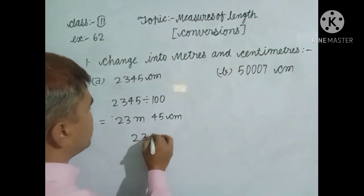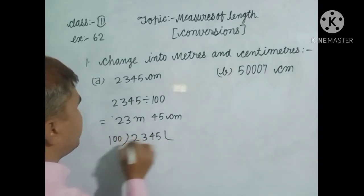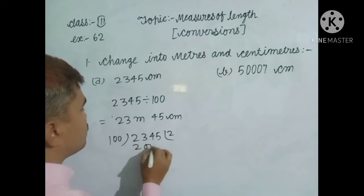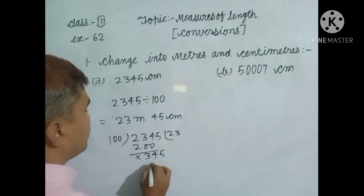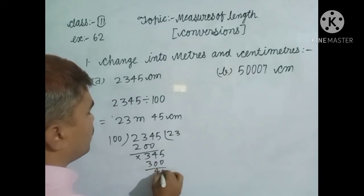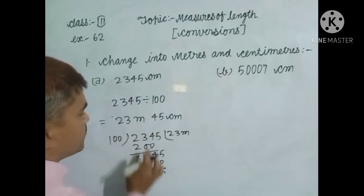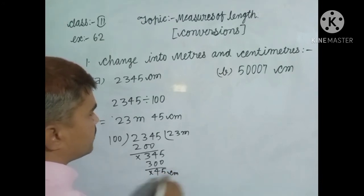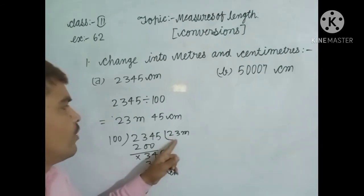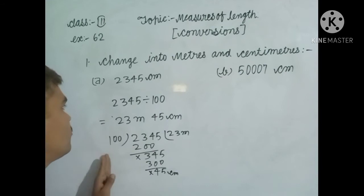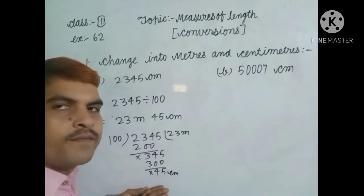Writing this down, we get 23 meters and 45 centimeters. The dividend is in the form of centimeters, so we write 45 centimeters. In this way you find out the meters and centimeters — 23 meters and 45 centimeters. This is both the long process and the short process to get the solution.